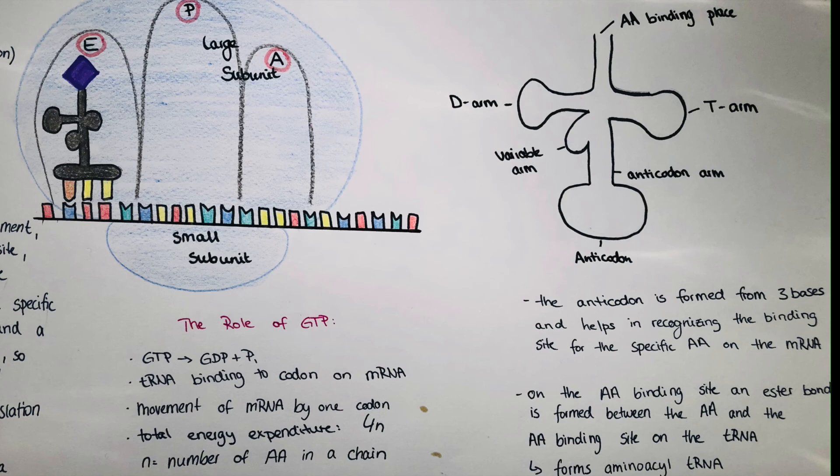Then we have the anticodon, the perhaps most important place of the tRNA. It is formed by three bases and it helps in recognizing the binding site for the specific amino acid on the mRNA. I drew it more in a scheme like manner within the ribosome where you can see where the anticodon is carrying the bases which are connecting to the mRNA.